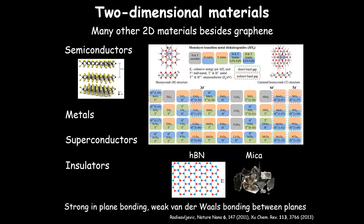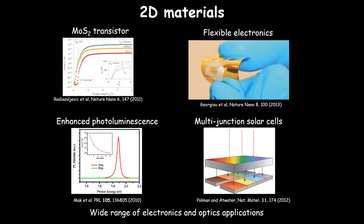With this wide range of materials, we're not limited to the electronic properties of graphene. We can envision many different things: making transistors out of molybdenum disulfide, flexible electronics, or looking at optics — here's photoluminescence from a monolayer of molybdenum disulfide. We can make different sorts of devices and applications. Here's an idea for making a multi-junction solar cell, combining a range of 2D materials to be sensitive to a broad spectrum and achieve higher efficiency collection. These 2D materials, either alone or in combination, hopefully will enable a wide range of electronics and optics applications.